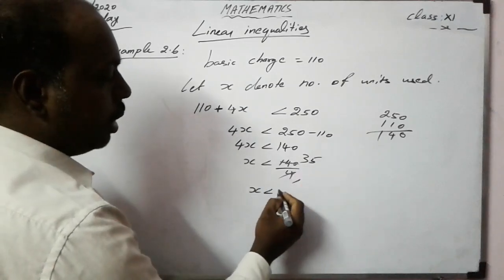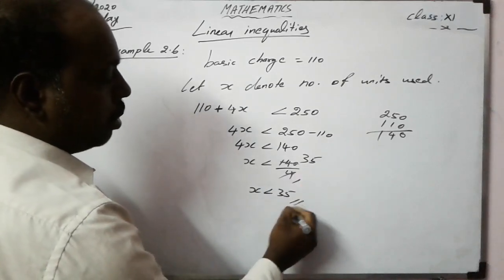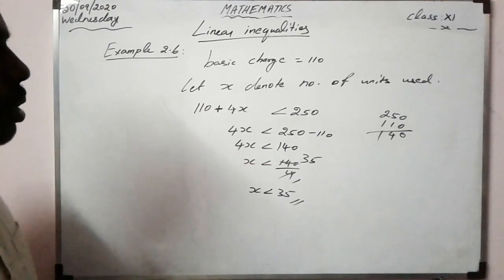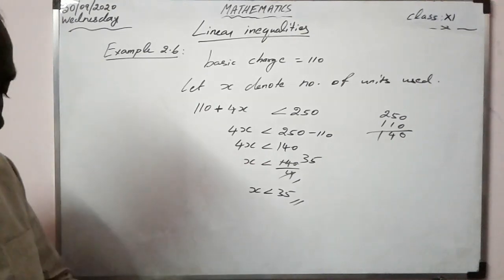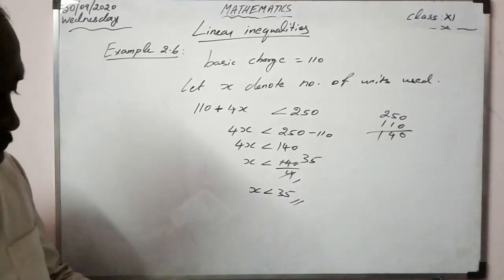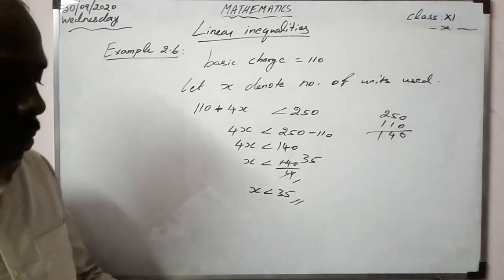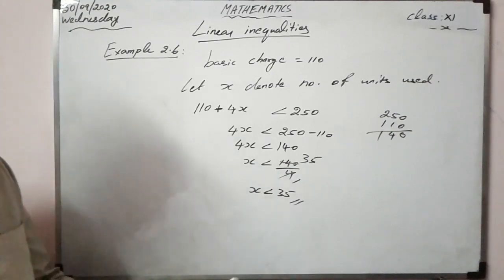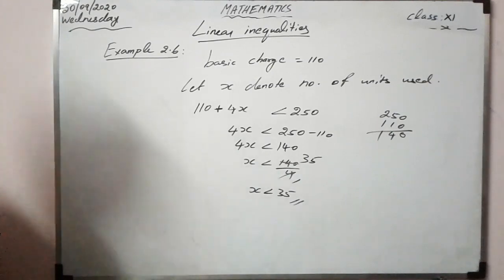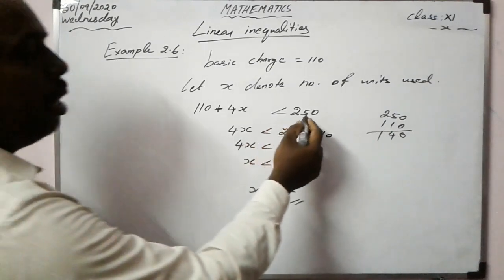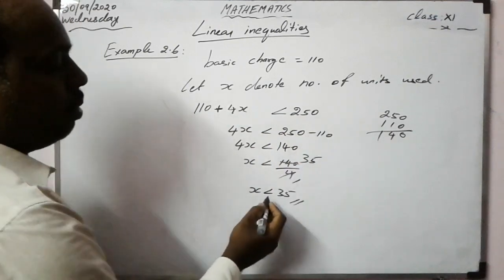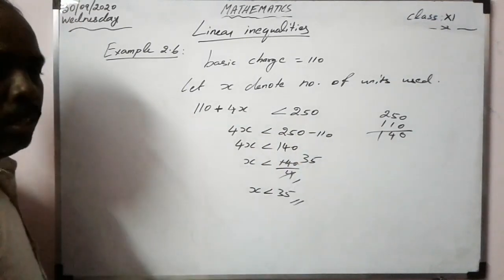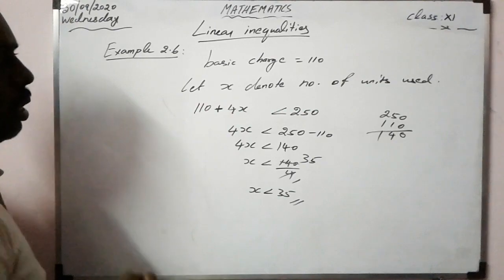So x is less than 35. The person should keep his usage below 35 units in order to keep his bill below rupees 250. He can use less than 35 units.